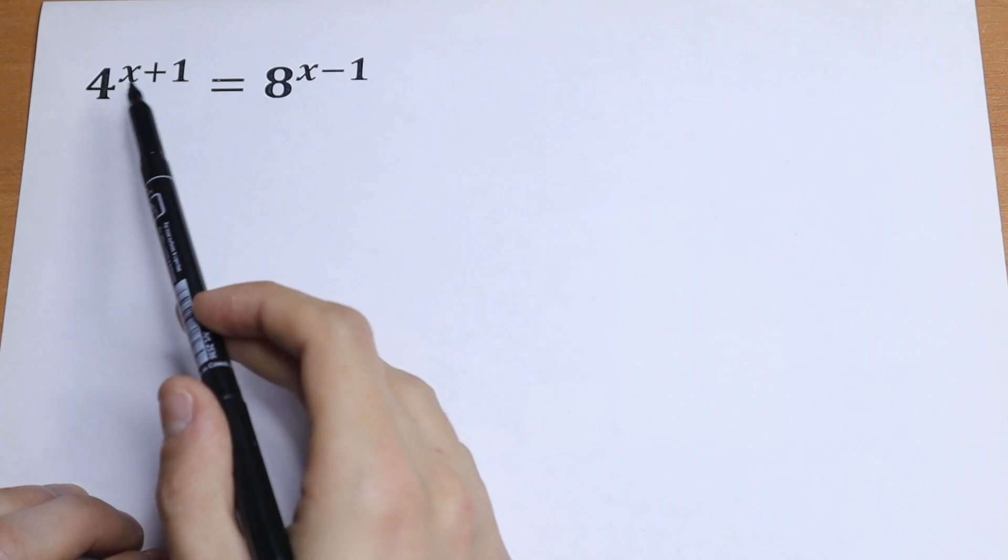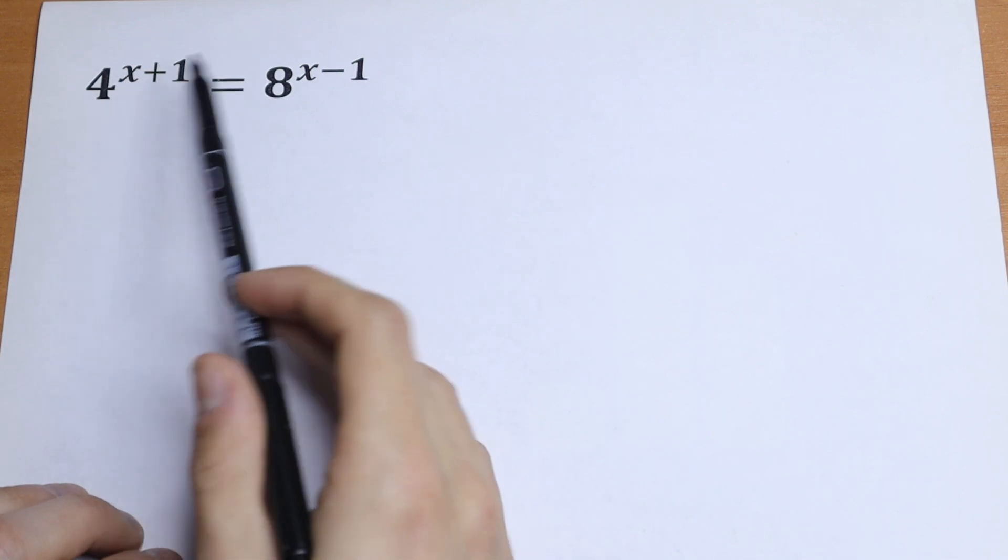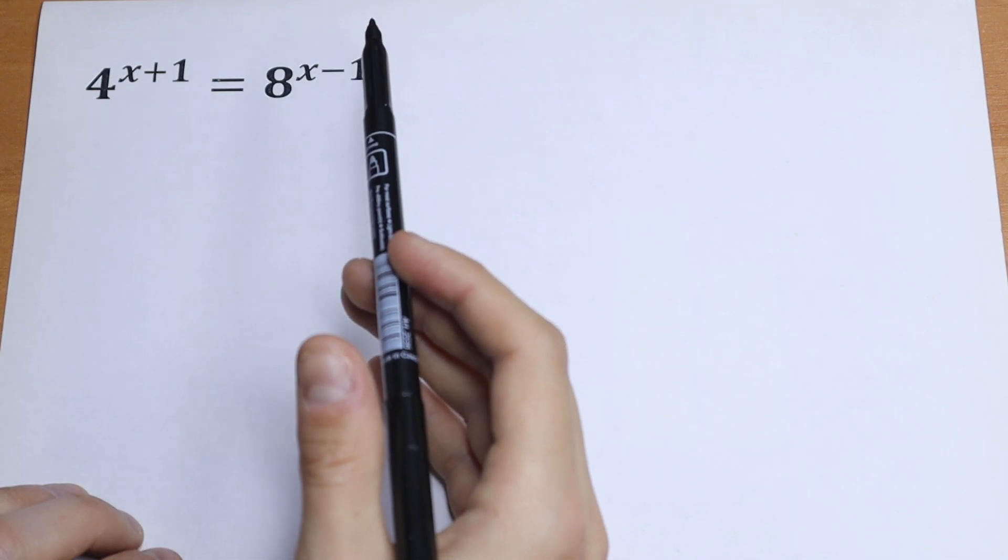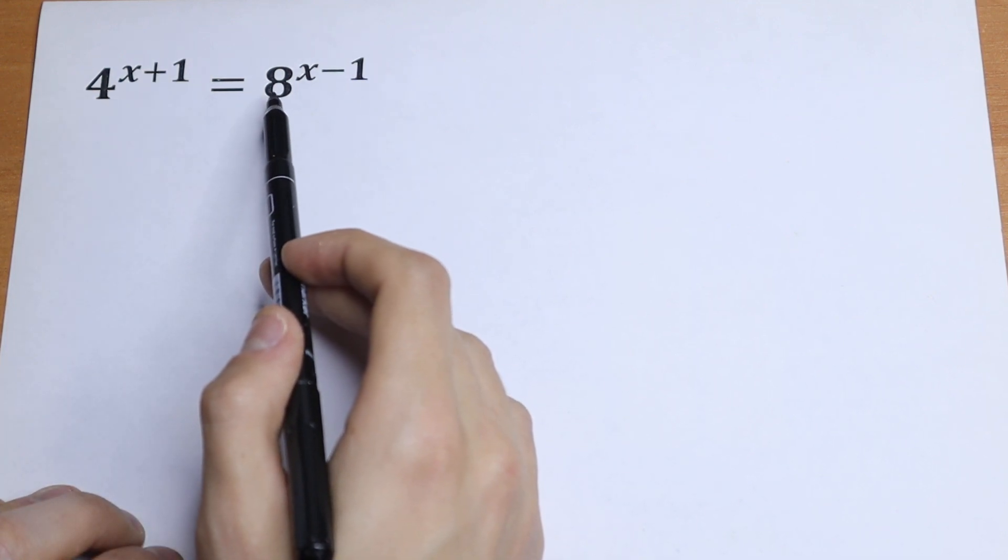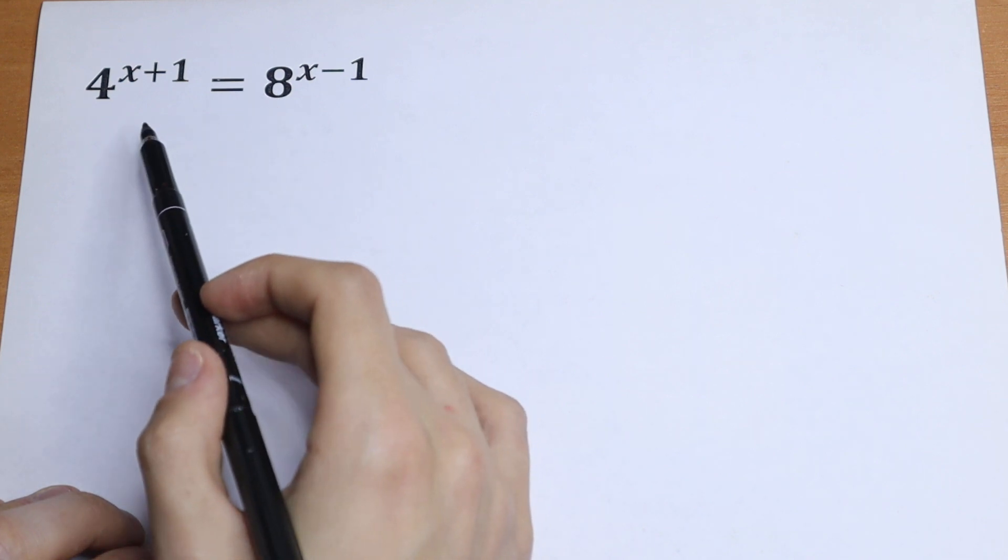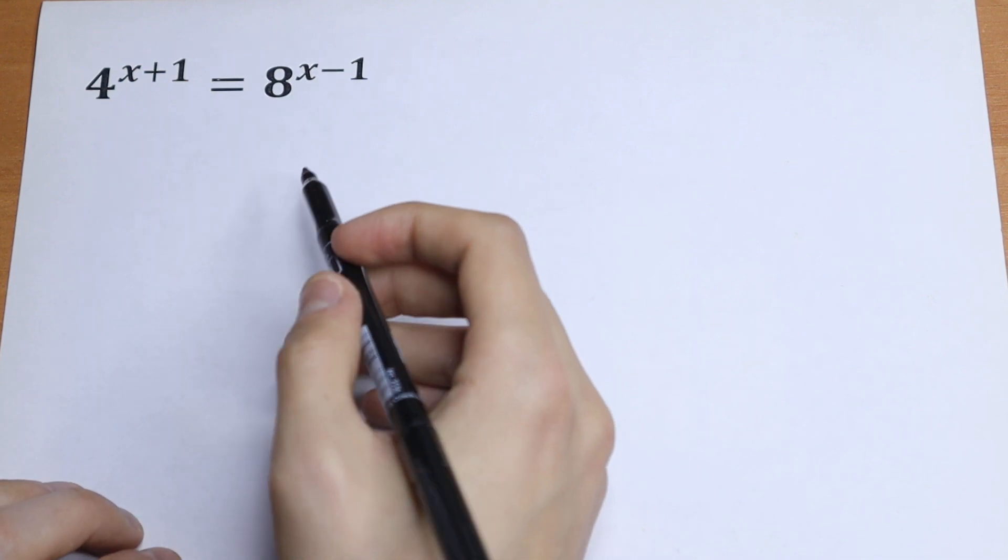On the first sight, this equation is really hard because we have different bases and different exponents. So how can we do with this? We can express this 4 as 2 squared and this 8 as 2 cubed, and then we will have the same basis. So let's try to do this.